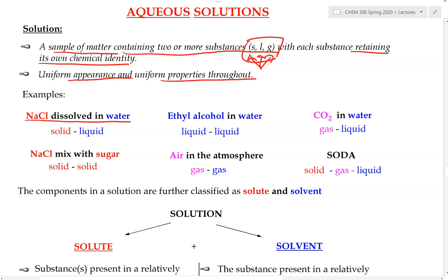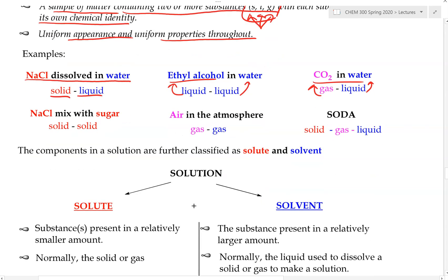If we want sodium chloride dissolved in water, we have a solution where a solid dissolves in a liquid. If we have a solution of ethyl alcohol in water, ethyl alcohol is a liquid and water is a liquid — so this is a liquid dissolved in a liquid. If we have carbonated water, basically CO₂ in water, CO₂ is a gas and water is a liquid, so we have a gas dissolved in a liquid. And if we mix sodium chloride and sugar together, we still have a solution — solid dissolved in another solid.